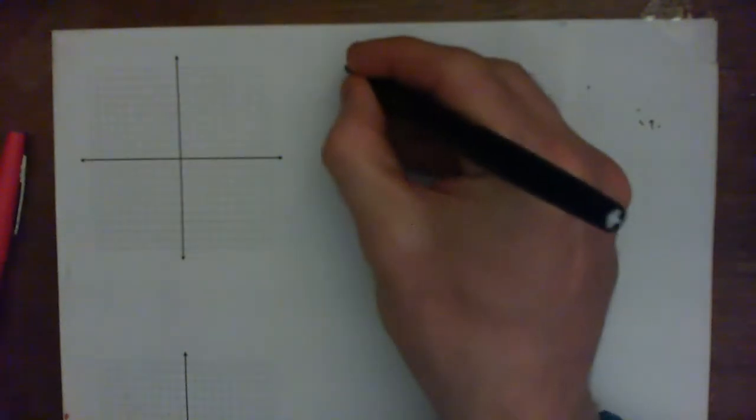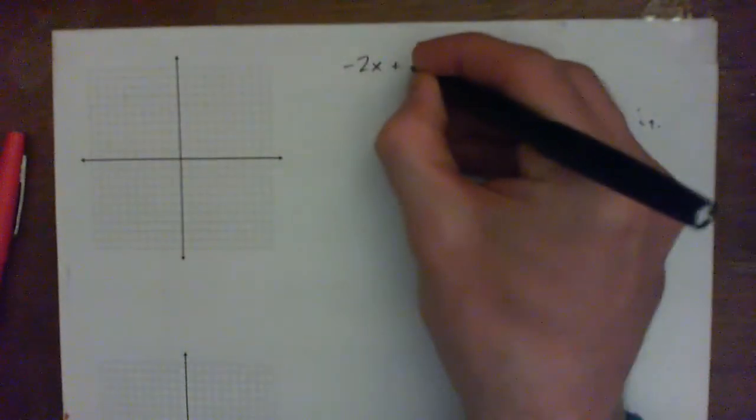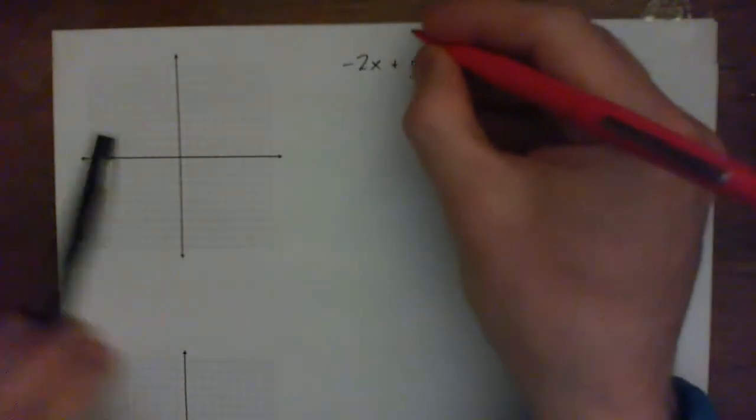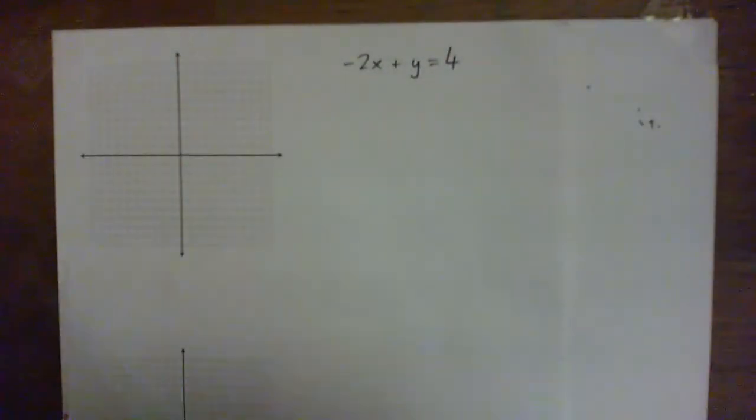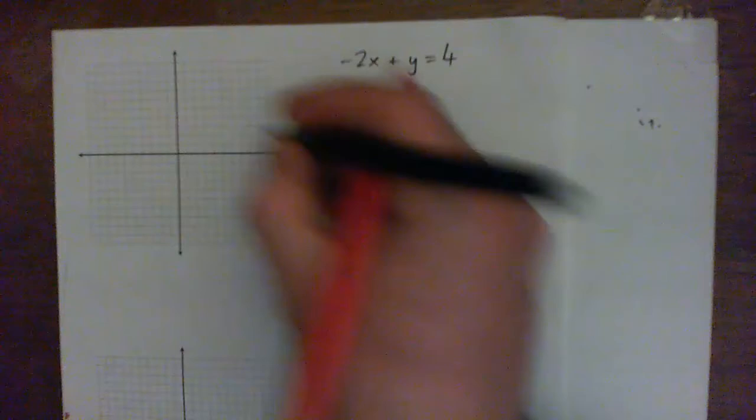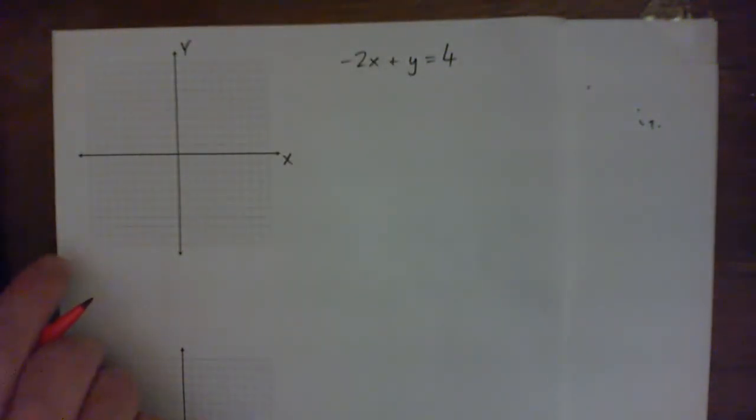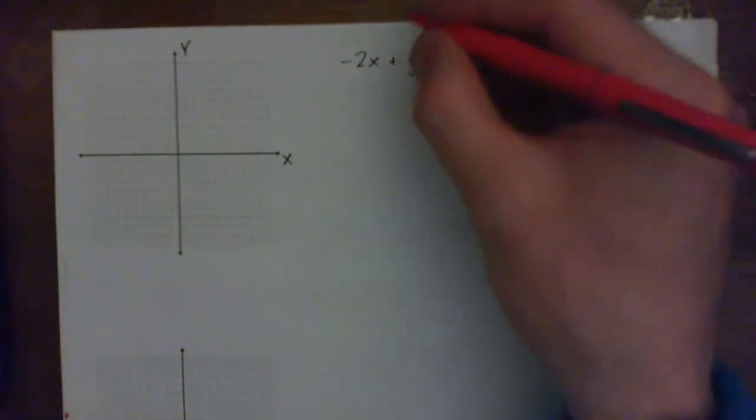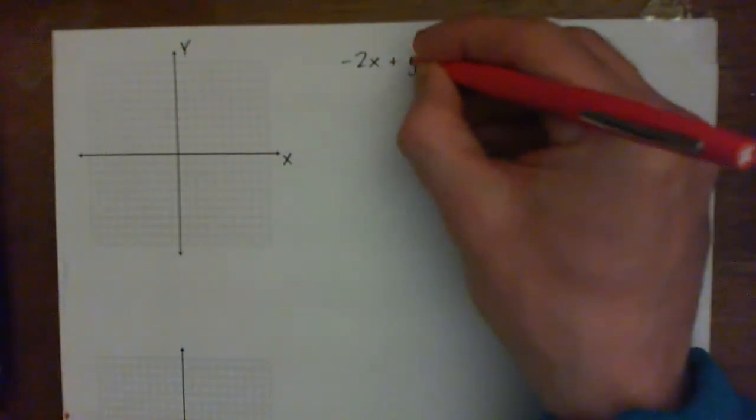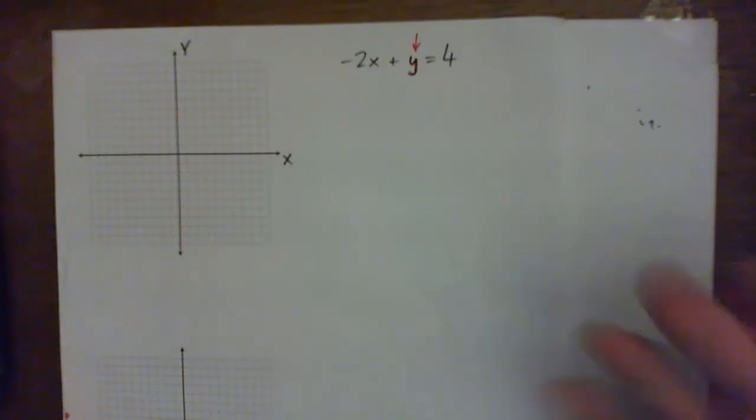All right, so we got negative 2x plus y equals 4, and the first thing we're going to do is we need to graph this thing. But first we're going to get y by itself, so we can make a little table and then graph it, right?